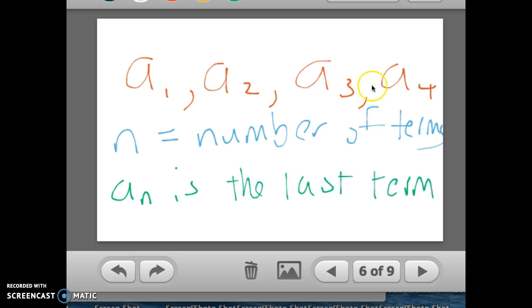The 4 is down there, like the base of a log function. I use the variable n to denote the number of terms in the sequence. So here n is 4. But no matter how many terms I have, if I have n terms, then A sub n is the last term. Here n is 4, but we can always say that A sub n is the last term of the sequence.